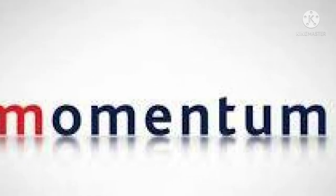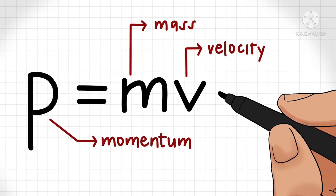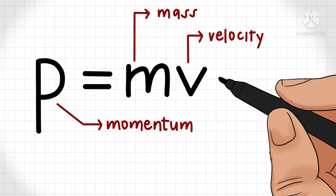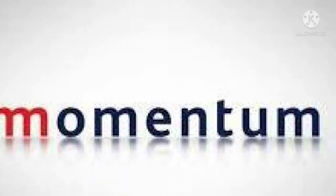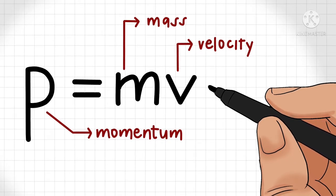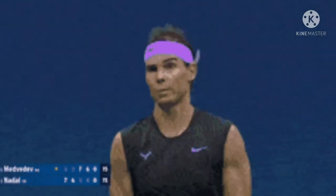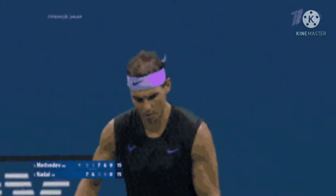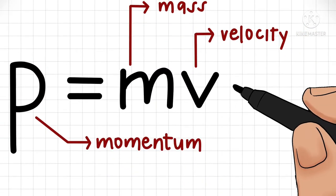Thus the quantity of motion in a body depends on the mass and velocity of the body. This gives another term which is known as momentum. The momentum of a body is defined as the product of its mass and velocity: p = m × v, where p is momentum, m is mass of the body, and v is velocity of the body.